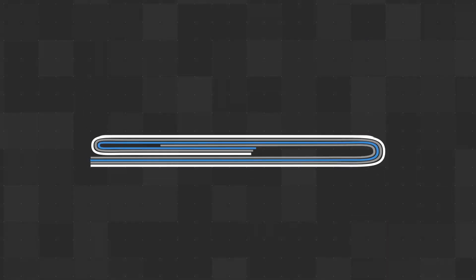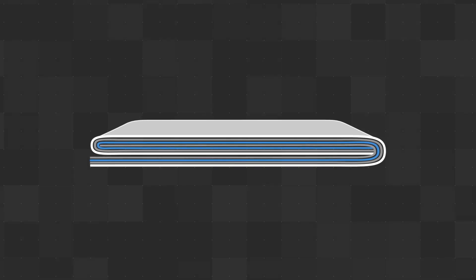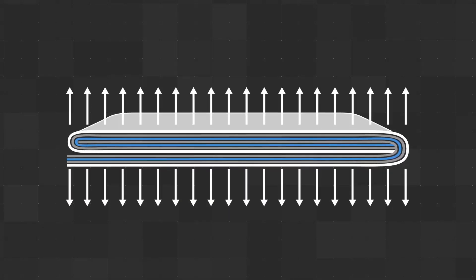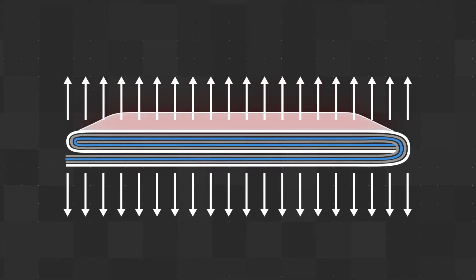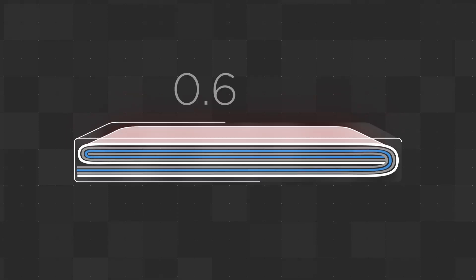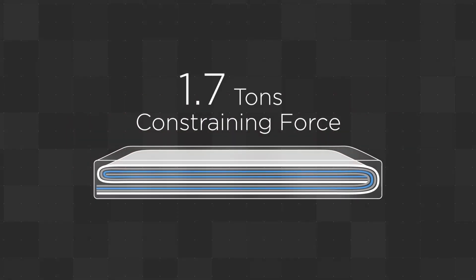A conventional lithium-ion battery can't practically accommodate a 100% active silicon anode because they expand significantly during charging, creating high pressure within the battery. This pressure acts on the large face of the battery and would require a constraining force as large as 1.7 tons to keep the anode from expanding.